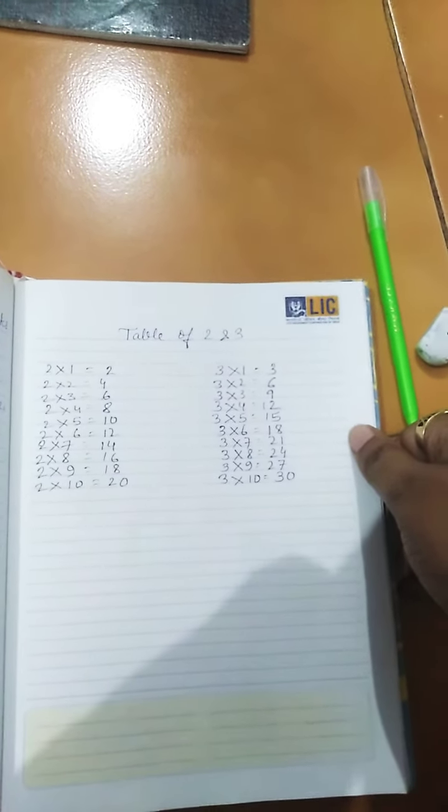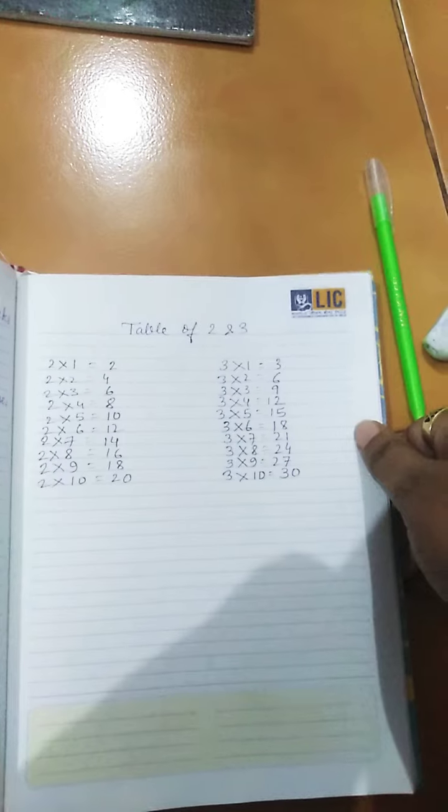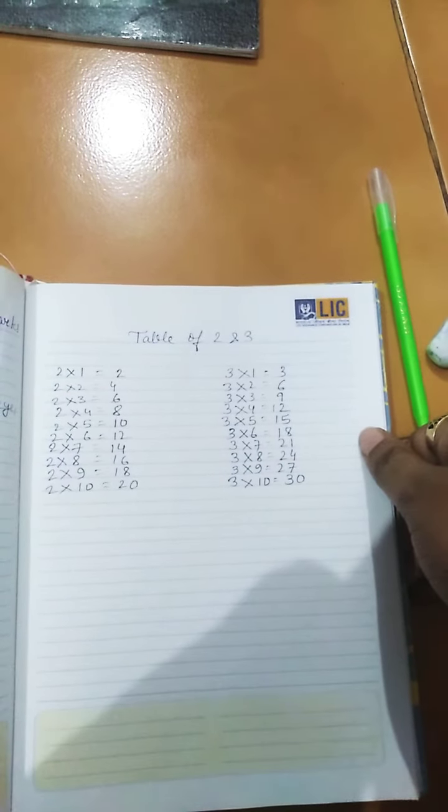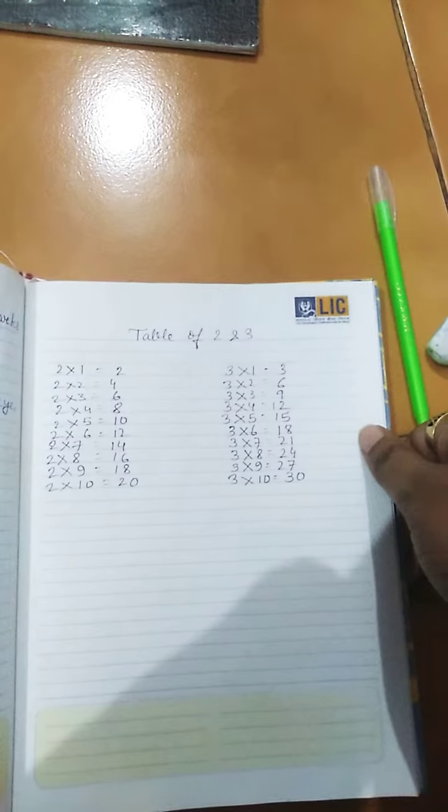So here's the table: 2×1=2, 2×2=4, 2×3=6, 2×4=8, 2×5=10, 2×6=12, 2×7=14, 2×8=16, 2×9=18, 2×10=20.